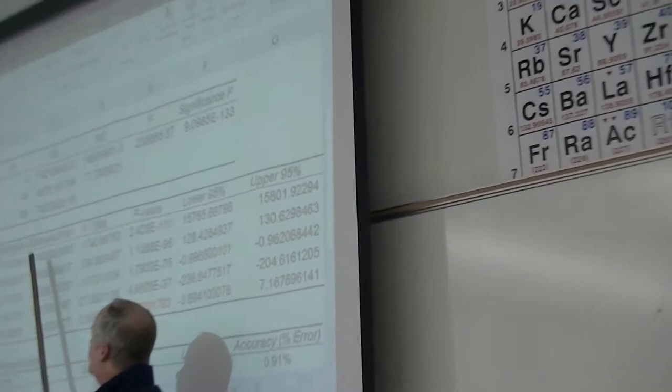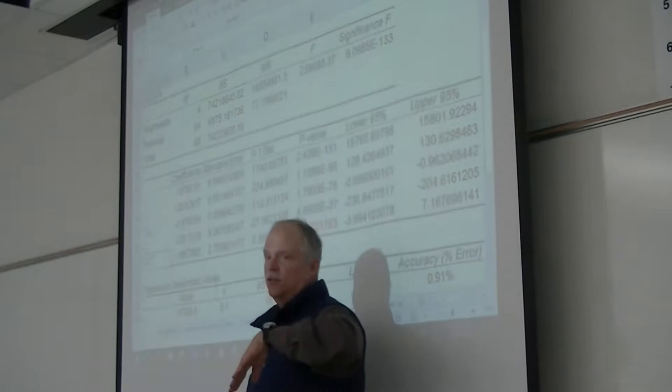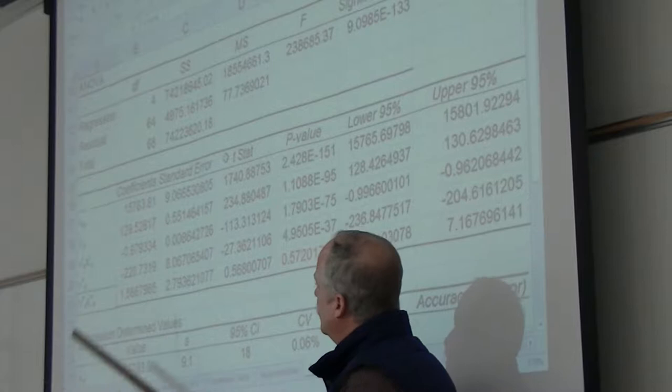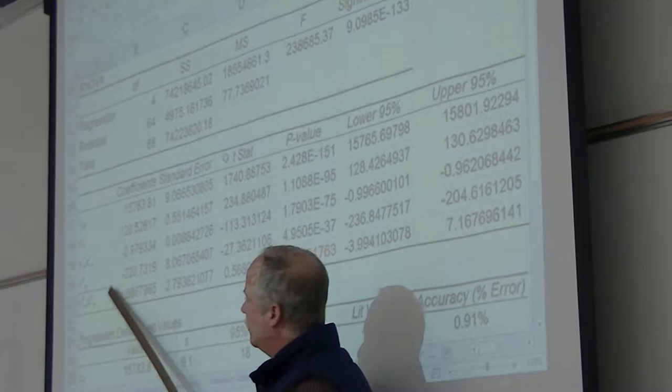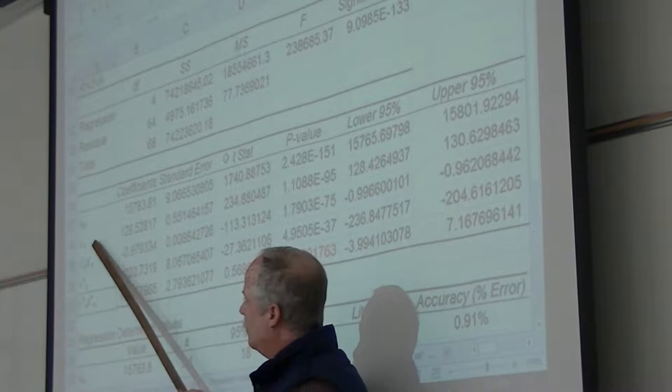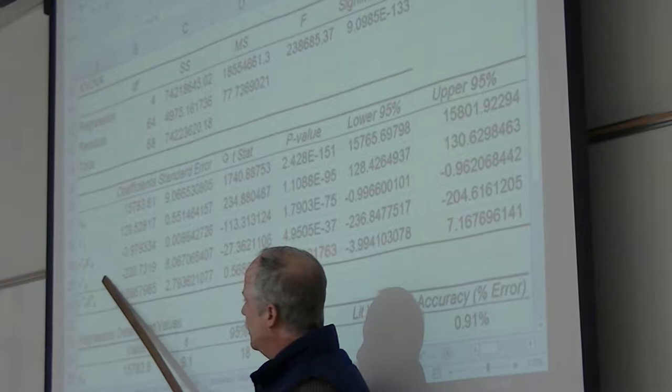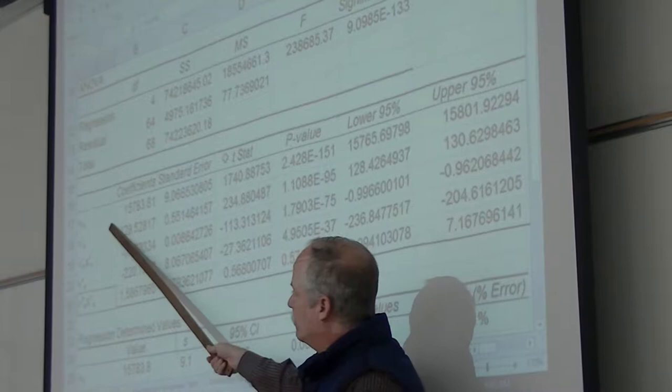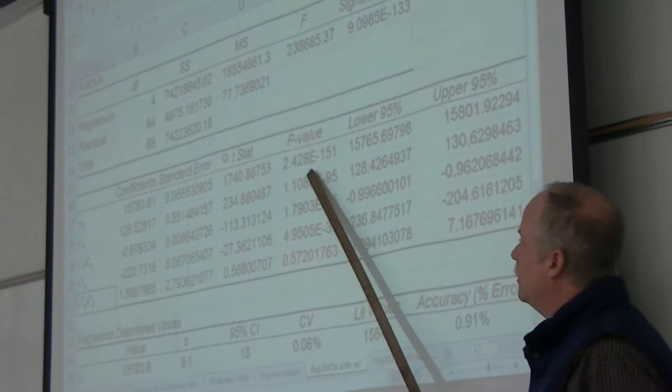If we look at the p-values — this is the regression output for a particular peak assignment in the iodine lab and the ANOVA output — this would be the intercept, x variable one, two, three, four. These are the order of my columns. I had the columns depending upon the upper state quantum number first, upper state quantum number squared second, lower state quantum number, and lower state quantum number squared. These were my four columns. These are the values, these are the standard errors, and over here are the p-values.